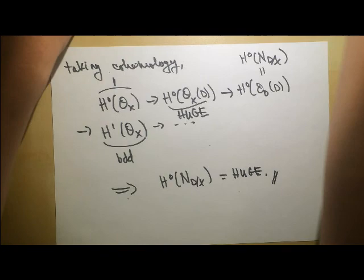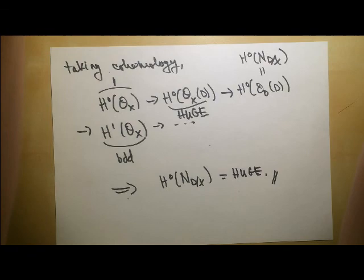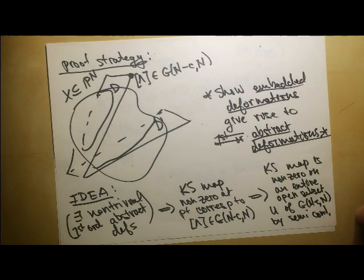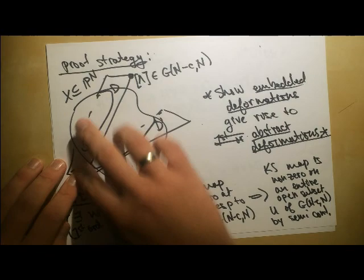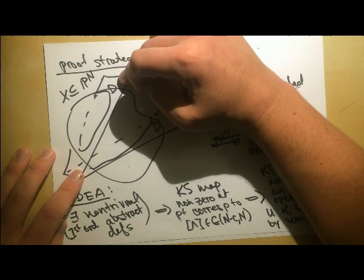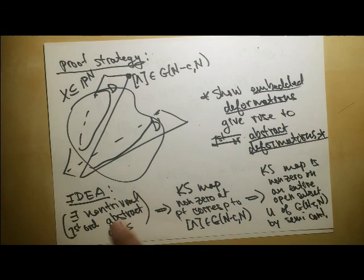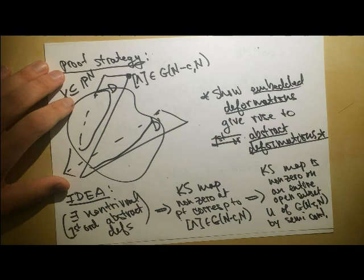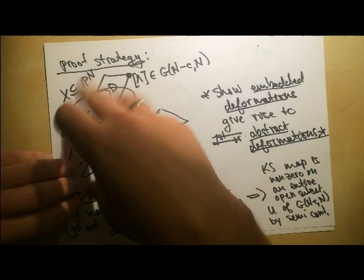So we showed the Kodaira-Spencer map was non-zero at a point, giving abstract deformations. Work of Bogomolov allows you to arrange each fiber to have trivial Albanese, and ampleness is an open property. Combining these, we get something with trivial Albanese and ample cotangent bundle on an open set. Taking the generic fiber where deformations are non-zero produces the desired examples showing Lang-Bombieri outside of Mordell-Lang. Thanks for watching.